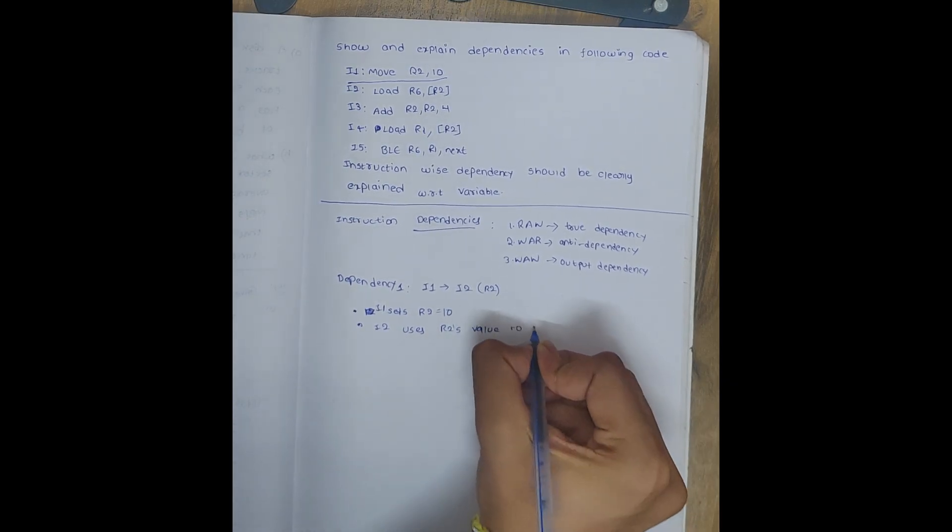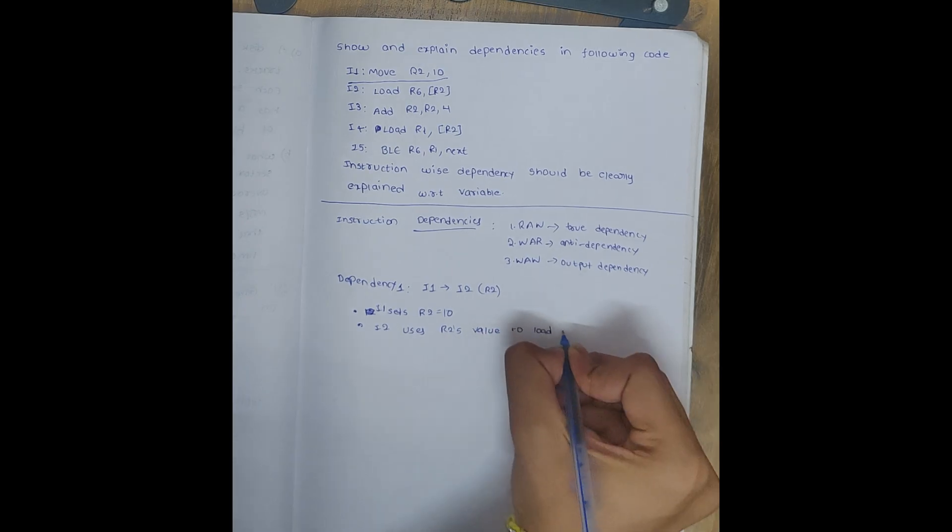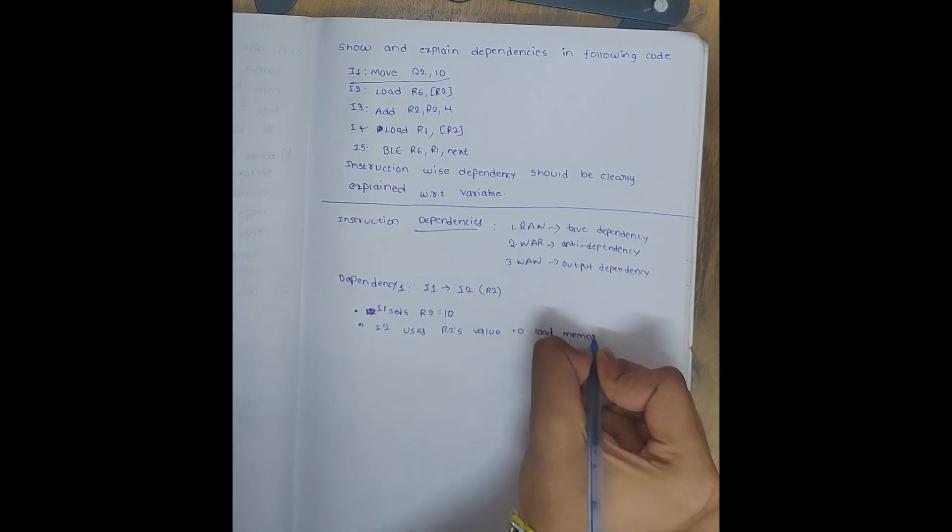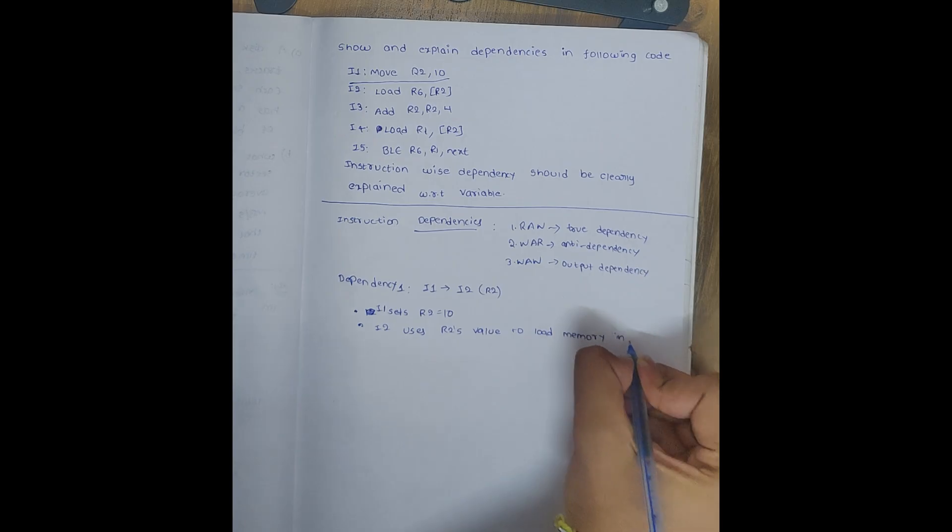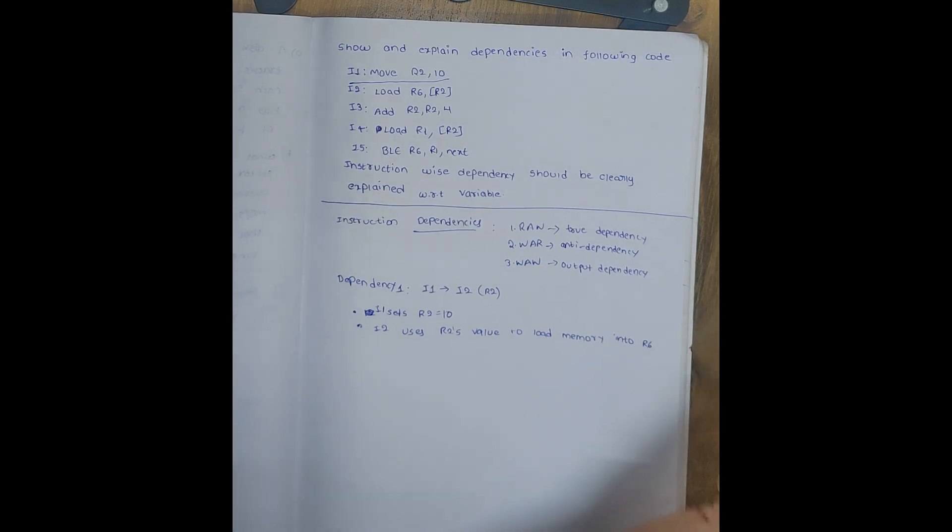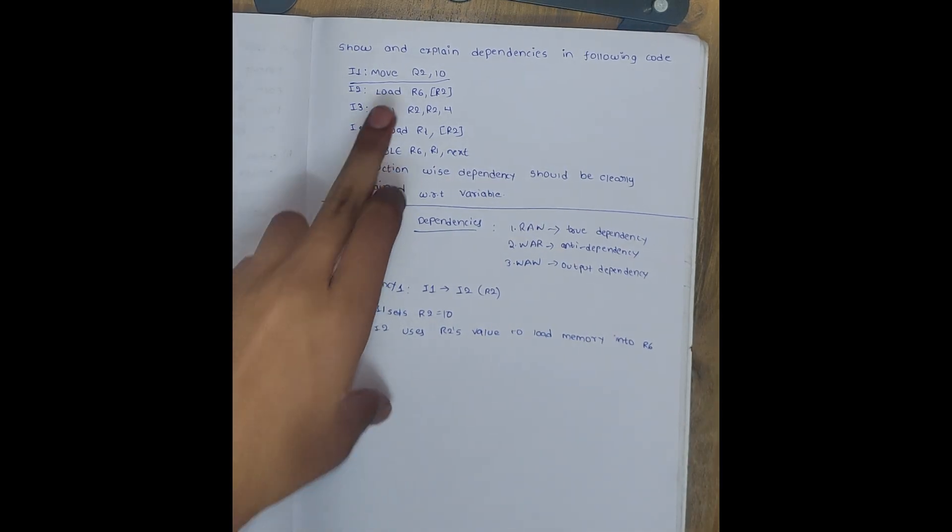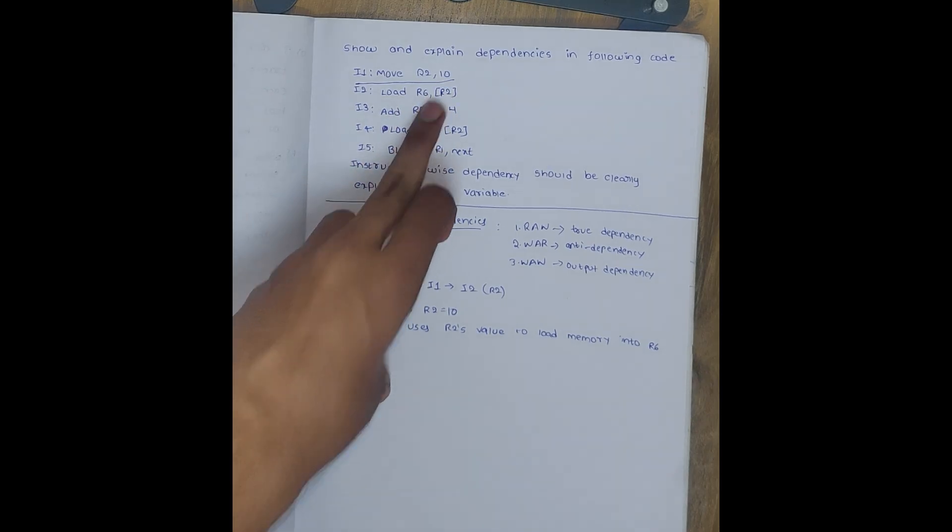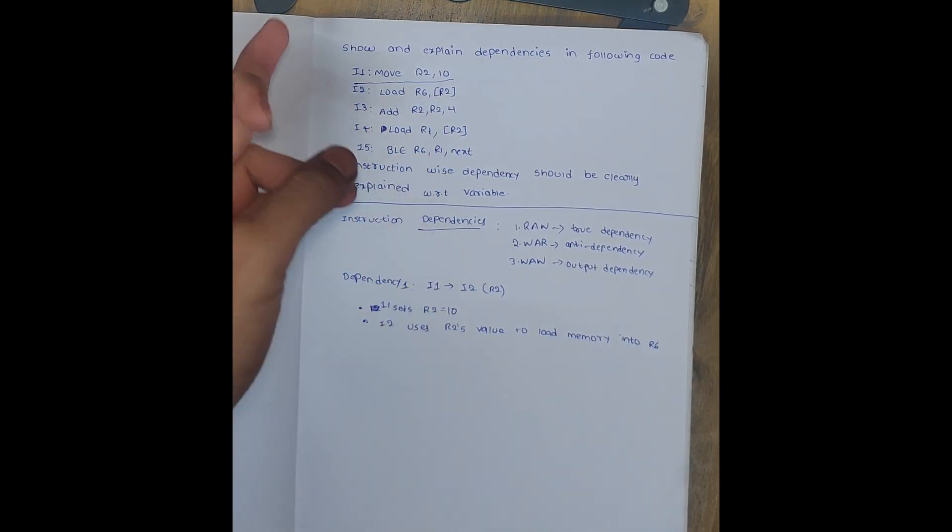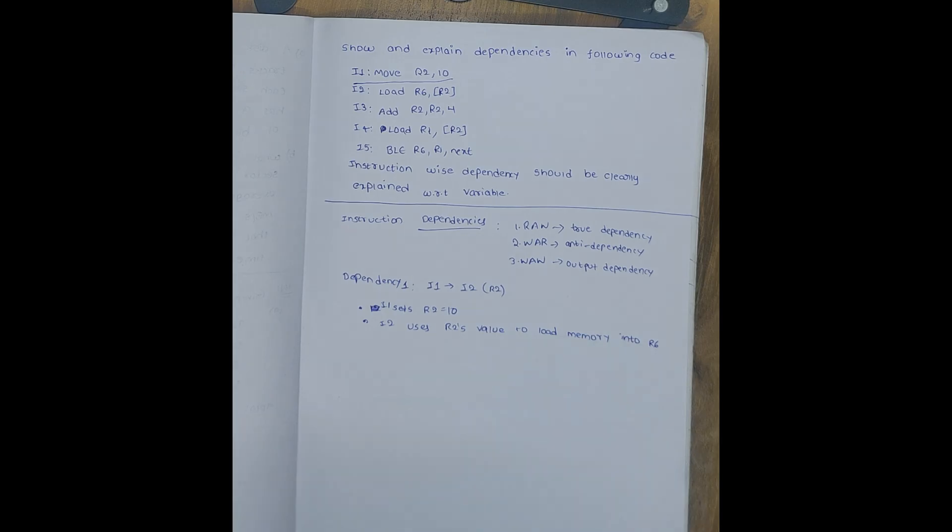To load memory into R6. Got it? What happened? I1 sets the value R2 equal to 10, and then I2 loads that R2's value to load memory into R6. Now which dependency is it?